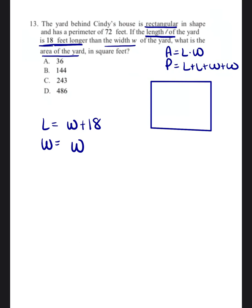So the width is equal to W, and then the length is the width plus 18. So if we were to go ahead and label this rectangle, it would be width and width, and then it would be width plus 18 and width plus 18.